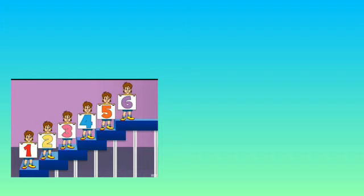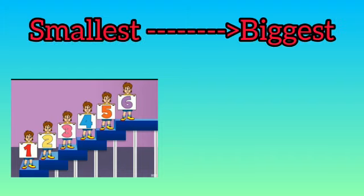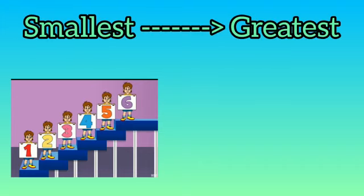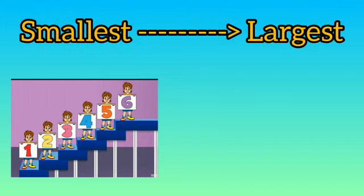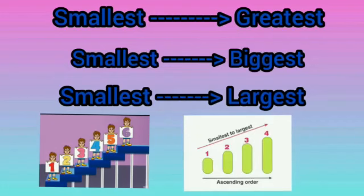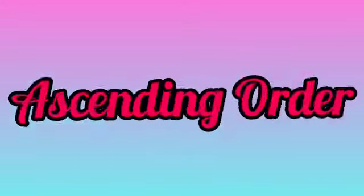When we arrange the things or numbers from the smallest to the biggest, or we can say from smallest to the greatest, or from smallest to the largest — it is known as ascending order.